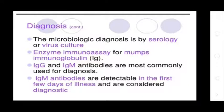Microbiological diagnosis is by serology or virus culture. Enzyme immunoassay for mumps immunoglobulin G and immunoglobulin M antibodies are most commonly used for diagnosis. Immunoglobulin M antibodies are detectable in the first few days of illness and are considered diagnostic.